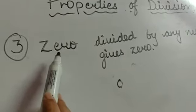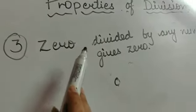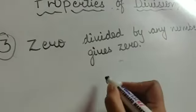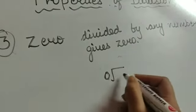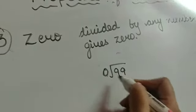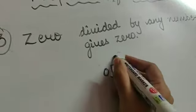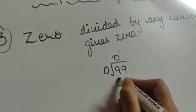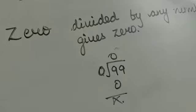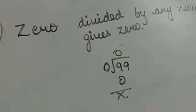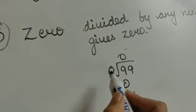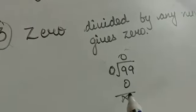Property 3: 0 divided by any number equals 0. Division by 0 is not possible. So if you divide any number by 0, the answer will be 0 — meaning divisible by 0 is not possible.